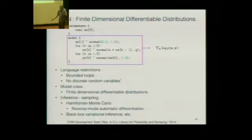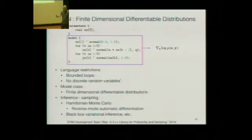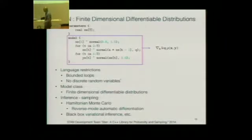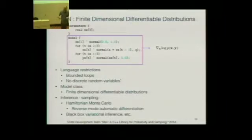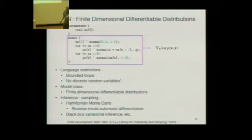How many of you know what this model is, just reading it right now? It's actually a Kalman smoother — a linear dynamical system. If you're in machine learning or statistics, this just jumps out at you. If I ask that same question to a statistics audience, basically everyone knows the answer.